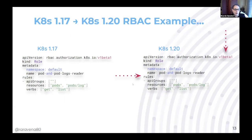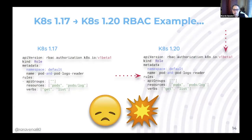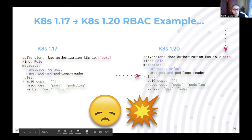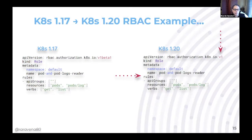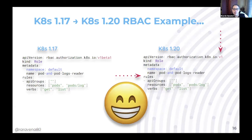Here's a concrete example: you have an RBAC role defined as v1beta1 in Kubernetes 1.17. If you upgrade to 1.20 and keep that same v1beta1 definition, it won't work — your pods may not be available and your logs won't be accessible. But if you do this ahead of time — change that API definition to V1 before the 1.20 upgrade — then everything works. You need to plan ahead.